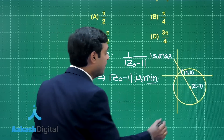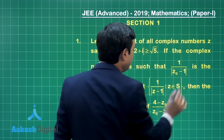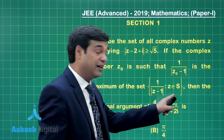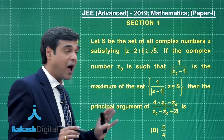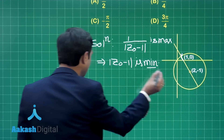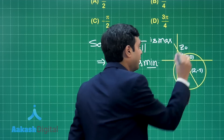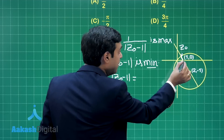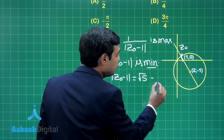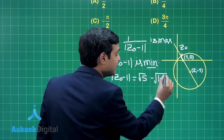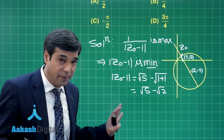Clearly, |Z - 1| is minimum when Z₀ lies at that point. Now, |Z₀ - 1| minimum equals the radius minus the distance of the center from the point (1, 0). The radius is √5, and the distance between the two points is √[(1-2)² + (0+1)²] = √2. So the minimum value of |Z₀ - 1| is √5 - √2. This is clear.